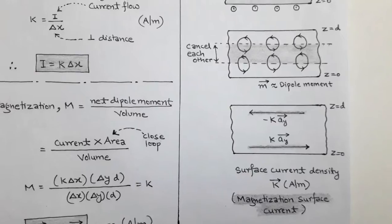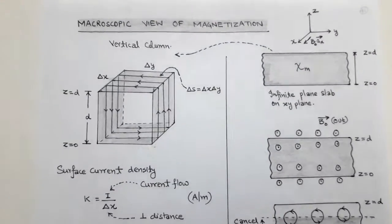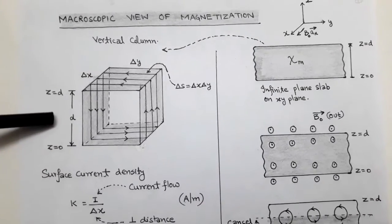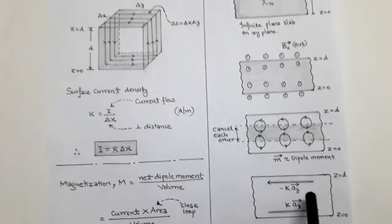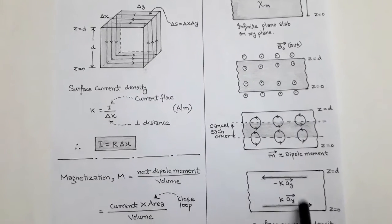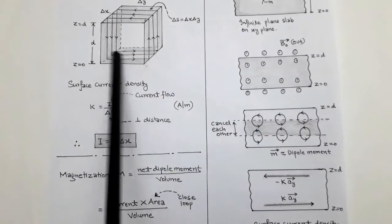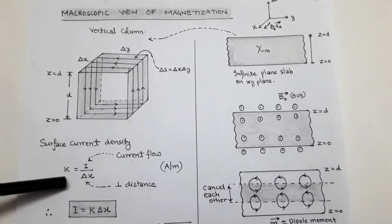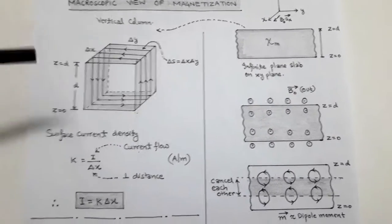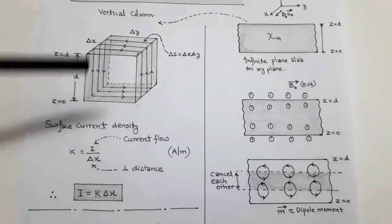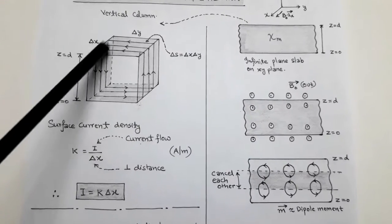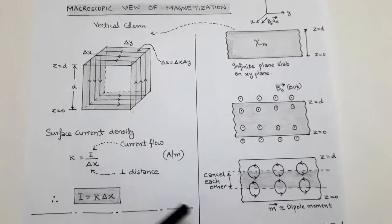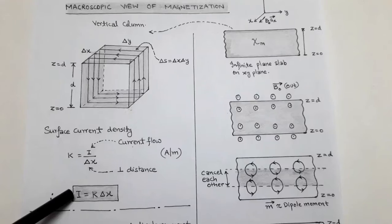From this infinite slab, we consider a small vertical column with dimensions delta x, delta y, and width d. The surface current density flows at the surfaces: at z equals d it is towards the negative direction of y, and at z equals 0 it is towards positive unit vector y. The formula for surface current density is current divided by perpendicular distance, where the perpendicular distance is delta x. So the magnitude k equals i divided by delta x, giving current i equals k times delta x.